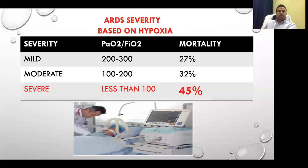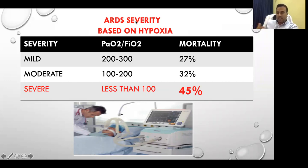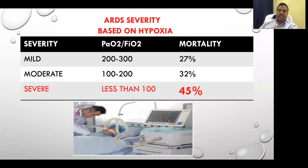Now moving to ARDS severity based on hypoxia. Death occurs mainly in old-age patients or those with respiratory illness like COPD, asthma, or heart failure. We classify severity using the PF ratio — PAO2 divided by FiO2. PAO2 is the partial pressure of arterial oxygen, determined by ABG (arterial blood gas) analysis. FiO2 is the fraction of inspired oxygen — if the patient is breathing atmospheric air, it is 21%. Since partial pressure is measured in mmHg, the PF ratio is also in mmHg. Normally it should be above 300, typically around 400.